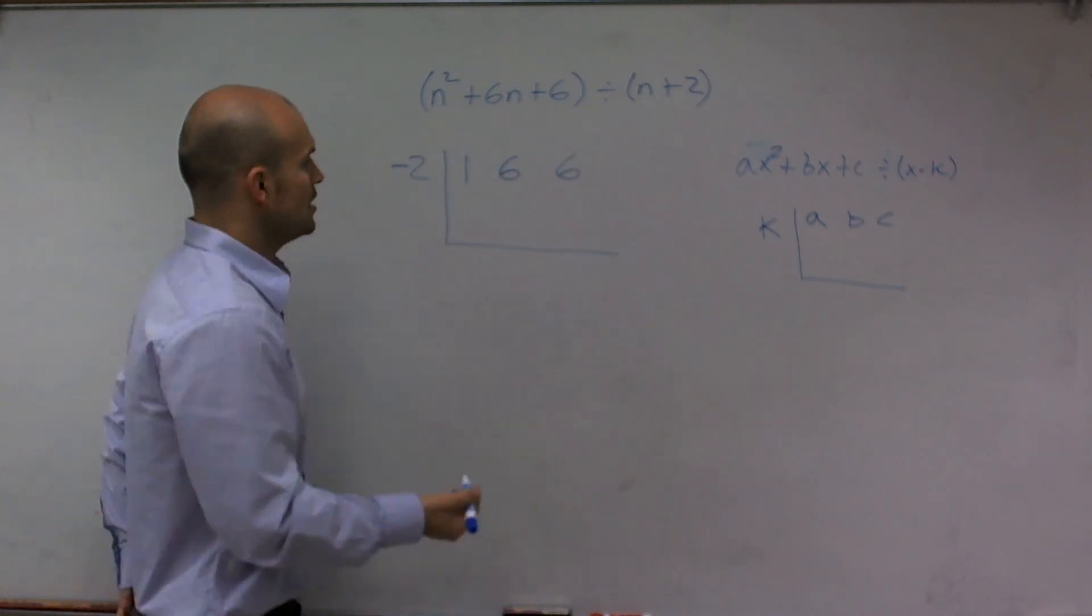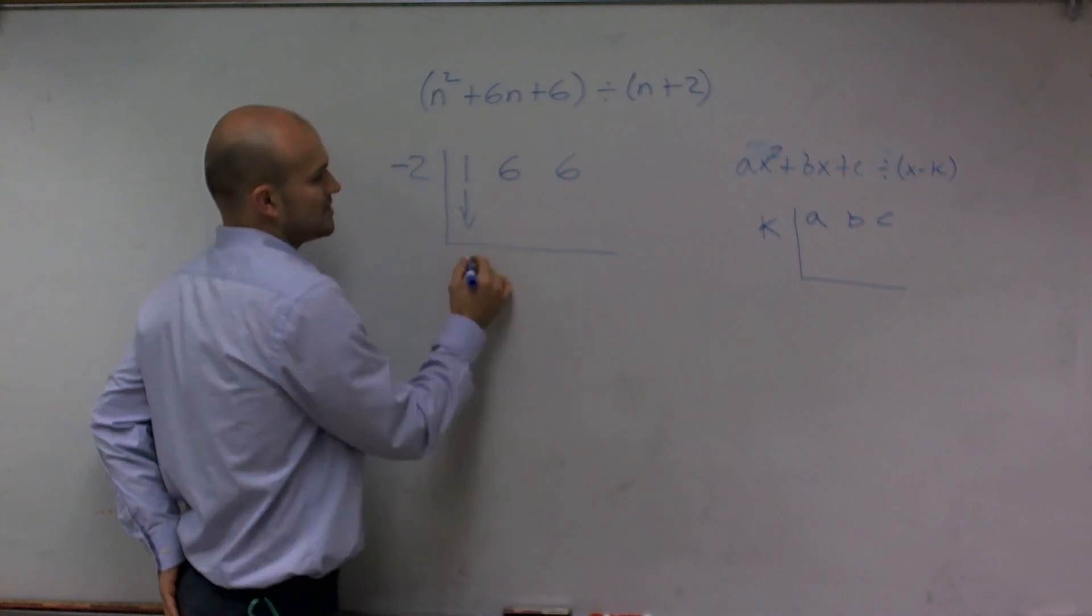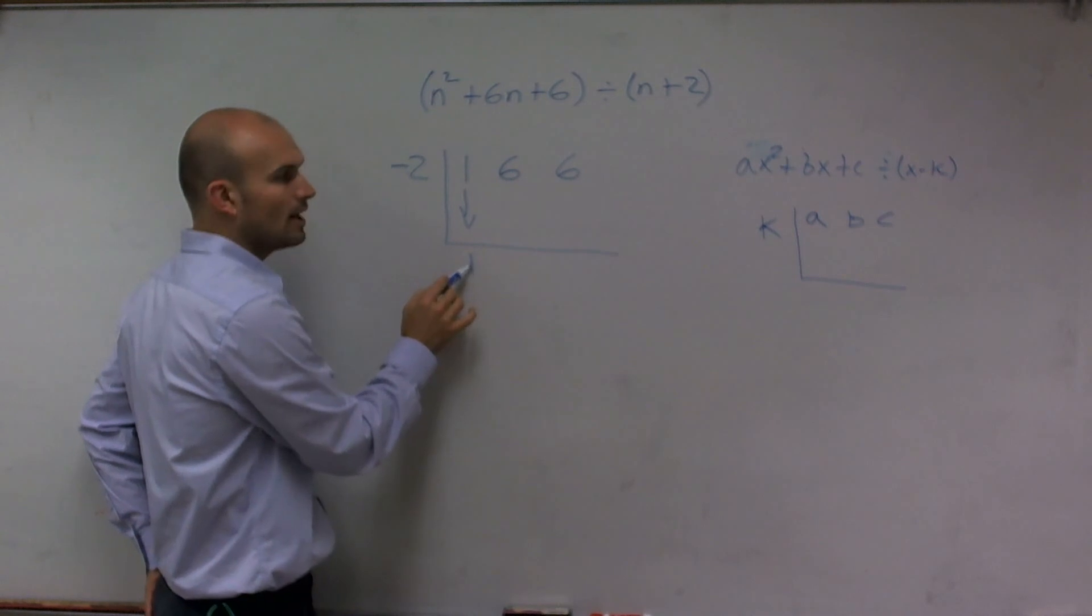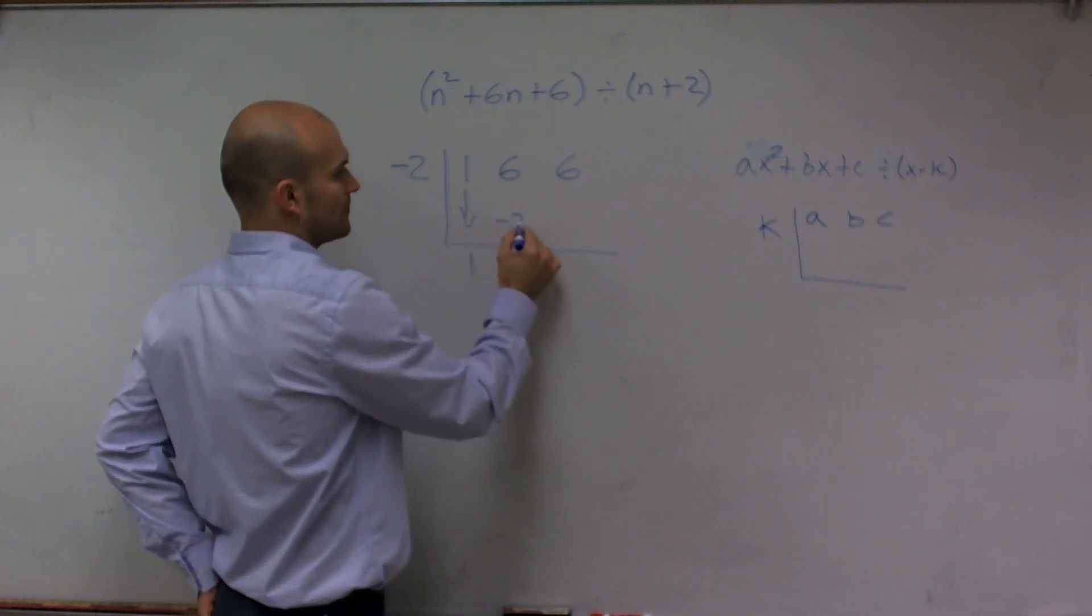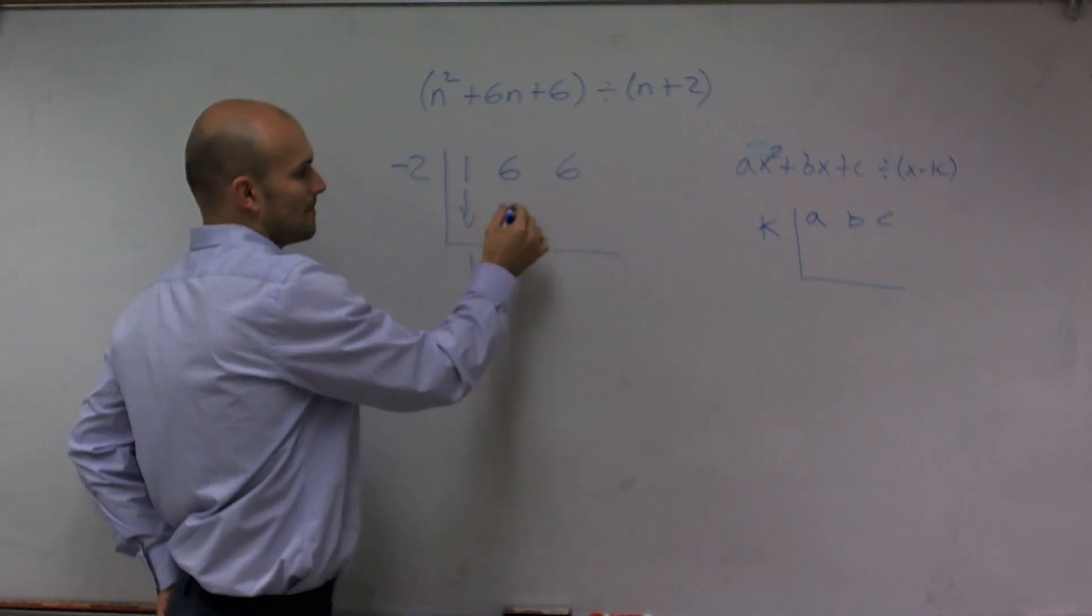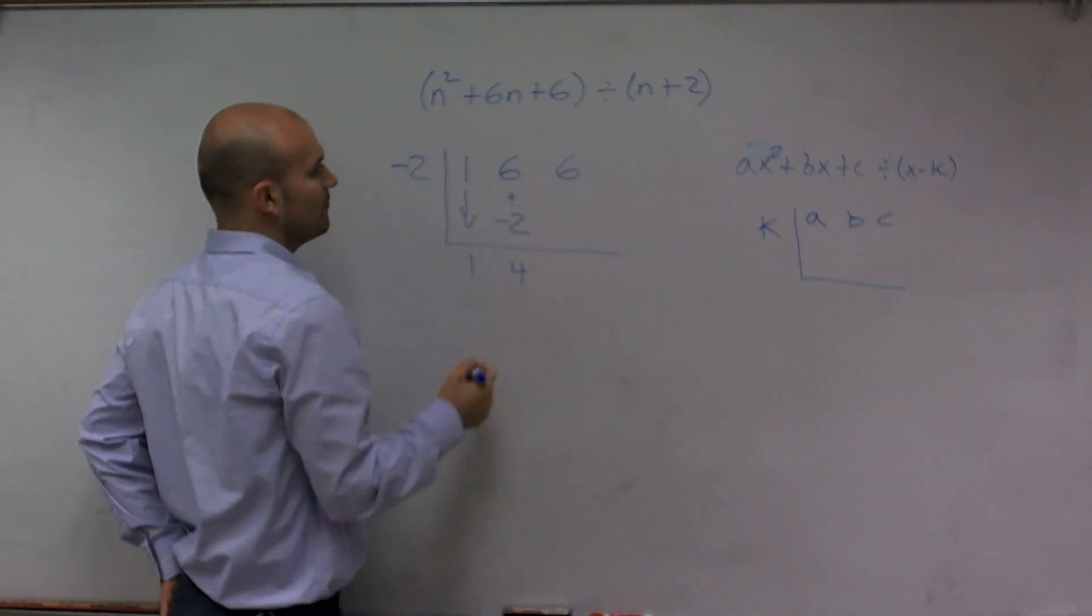So here's how synthetic division works. First thing to do is we drop down the first number as 1. Then we take negative 2 times 1 and put it over here. Then what we're going to do is add 6 plus negative 2 gives me 4.